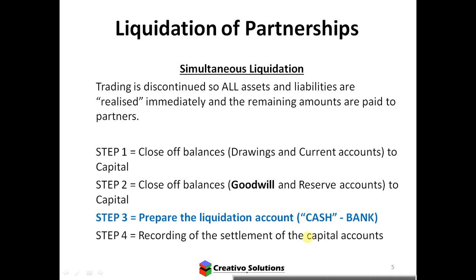For the simultaneous liquidation, you look at accounts that pertain to the partner. You have a drawings account, representing money taken from the business by the owner. You also have current accounts, which are short-term accounts relating to the partner. You have goodwill, which is a non-current asset worth something to the existing partners — remember, the existing partners would have created the goodwill and are entitled to it. Any reserve accounts also represent an entitlement to the partners that they've set aside for future use. If the partnership is being liquidated, those accounts need to be closed off to the capital account for each partner. Capital represents the long-term entitlement of each partner, and that's why we close off all those shorter-term accounts to capital.